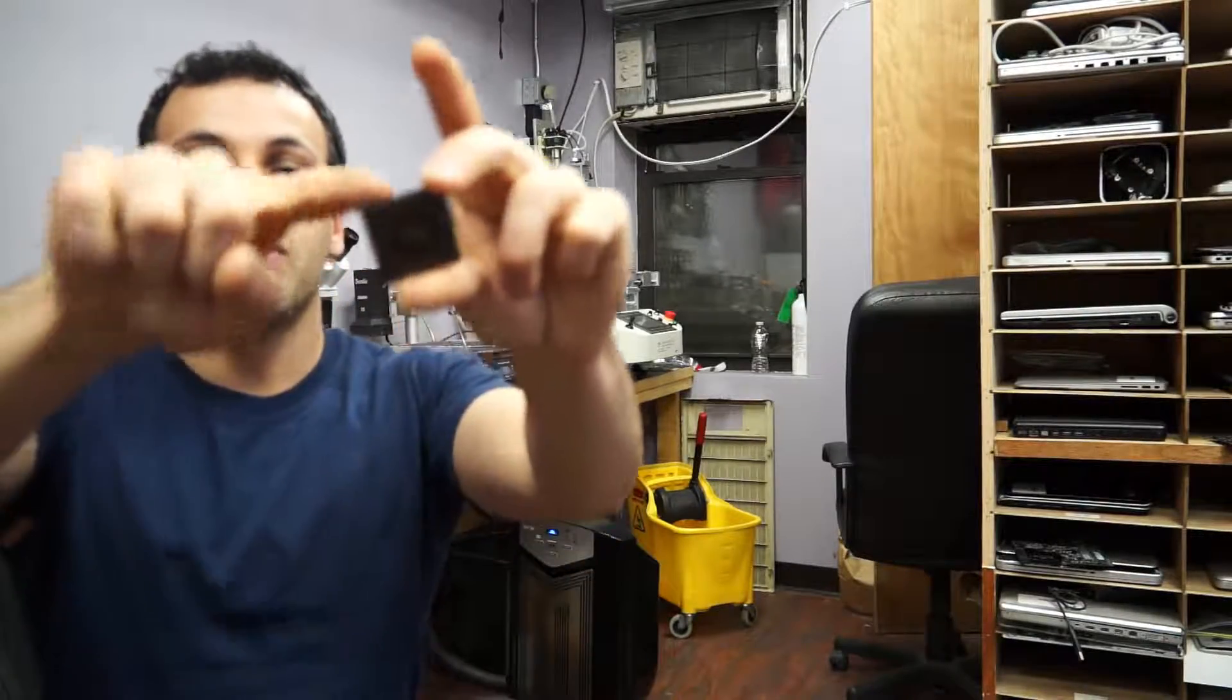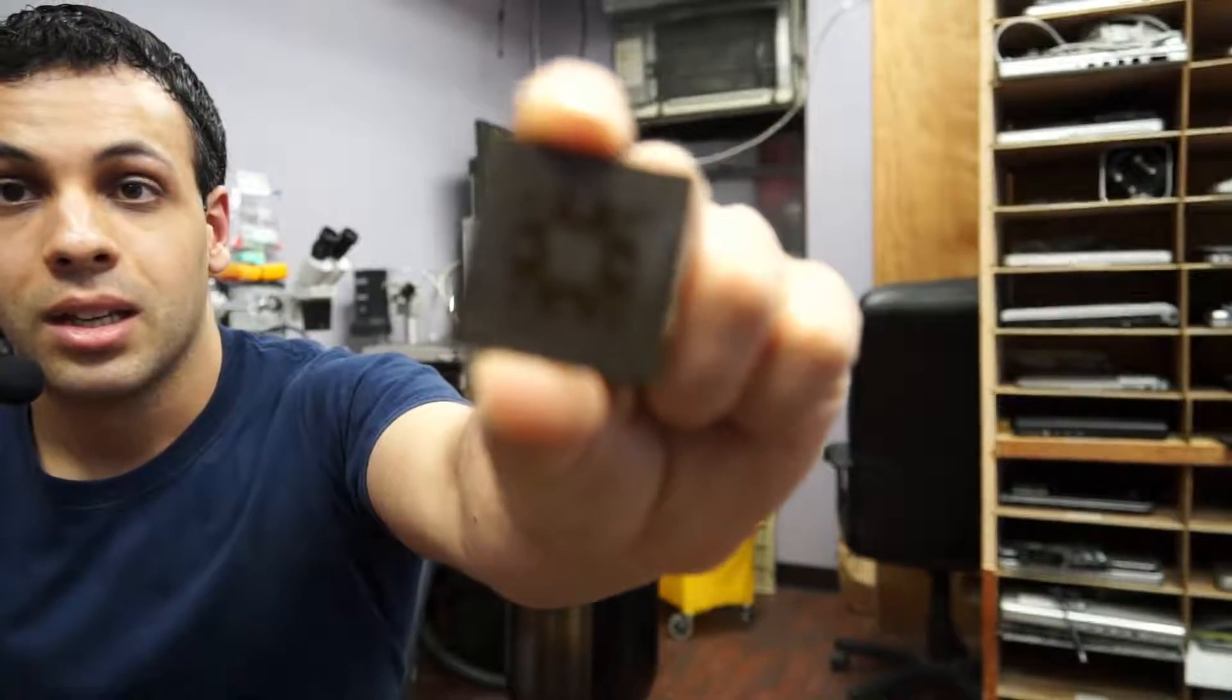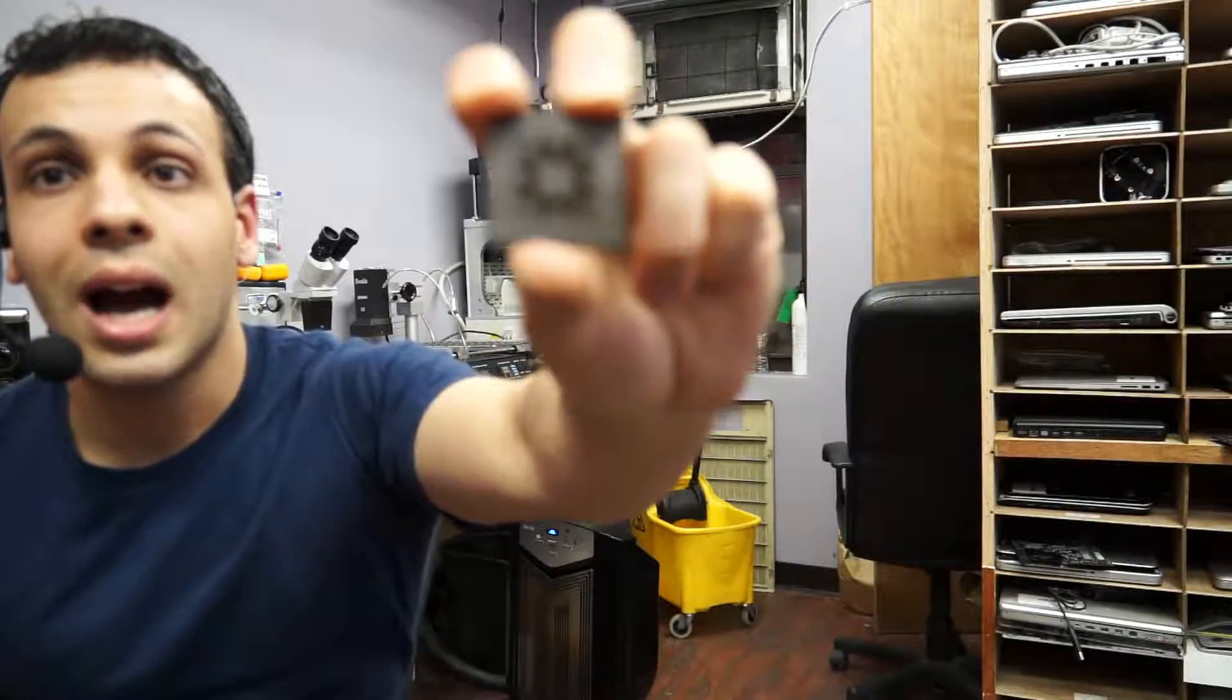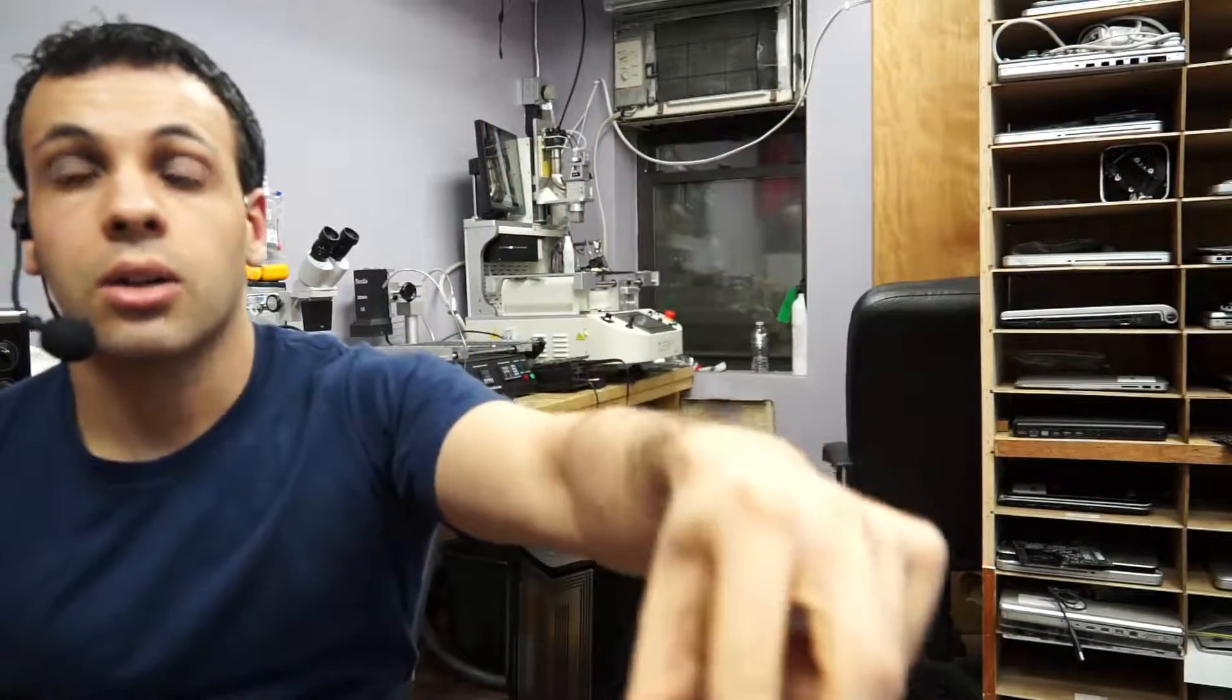So what they did is they decided, instead of just using the outside of the chip, we can actually use the entire chip and put these little balls on. So now we can use the entire chip to have connections that go to the board. And all of these are in the form of little solder balls that go underneath the chip.